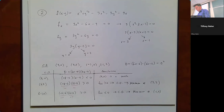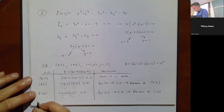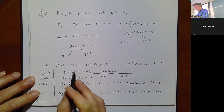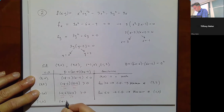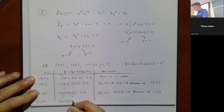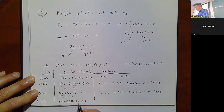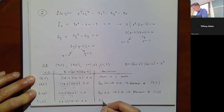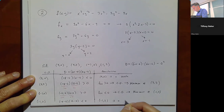At (-1, 2): D = (-6 - 6)(12 - 6) = (-12)(6), which is negative — a negative times a positive. So (-1, 2) is a saddle point.